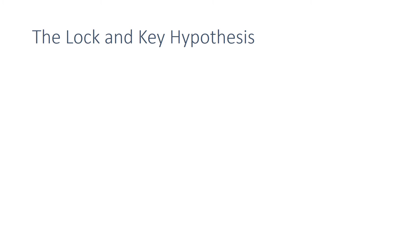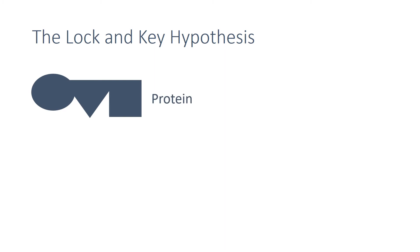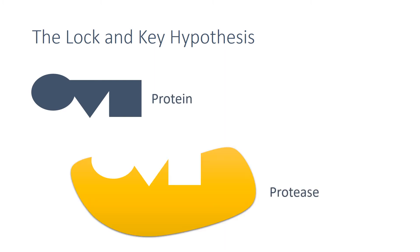The way in which enzymes work can be described and simplified using a model called the lock and key model. Take a food molecule such as this protein molecule. We have an enzyme that's specific to breaking down protein called protease. Specific means that it will only work on certain molecules. In general, we know the molecule being broken down as a substrate, and this is broken down by the enzyme.